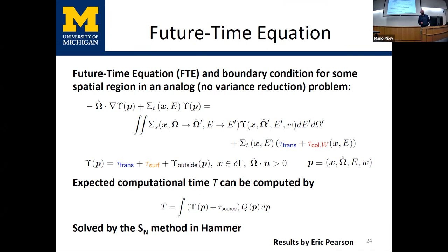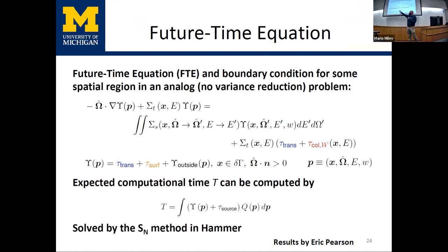The forward transport equation tells us where radiation is going; the adjoint equation tells us how radiation gets to points of interest — moving from a source out versus hypothetically getting to a detector. For the Future Time equation, we include special source terms for the generation of computational time. When a particle experiences a collision or crosses a surface, it costs the computer some microseconds to process. We use embedded timers in a short Monte Carlo calculation to estimate these source term magnitudes. We then write down our Future Time equation, which has streaming, total interaction, and scatter terms like the transport equation, plus a collision source term proportional to the total cross section times the transport time plus the collision processing time, and a boundary source term.